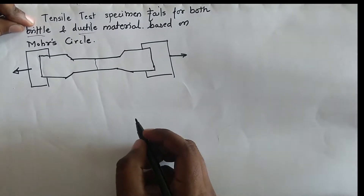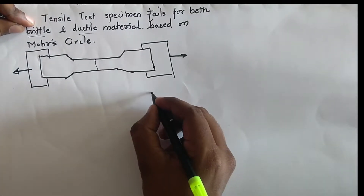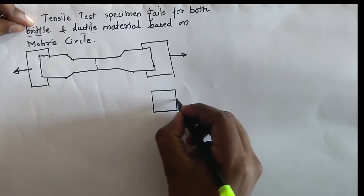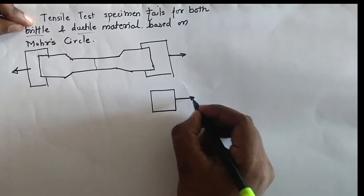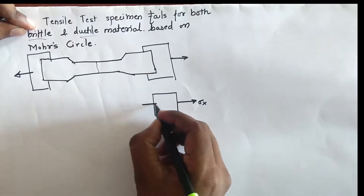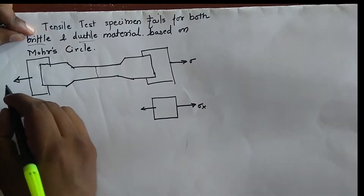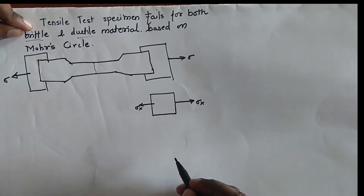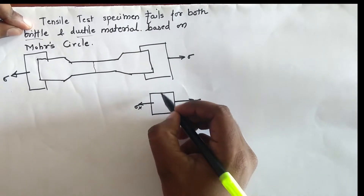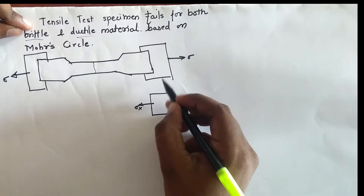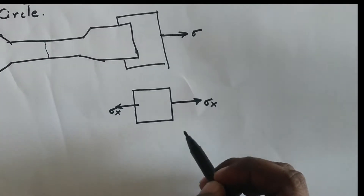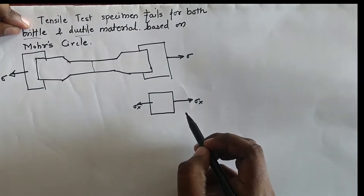The state of stress for this tensile test is like this. We have sigma x acting on the specimen. There is no stress at the y-plane or x-plane, and there are no shear stresses acting on the system.